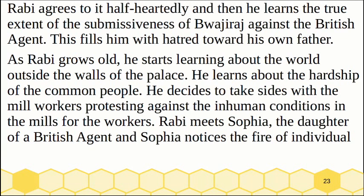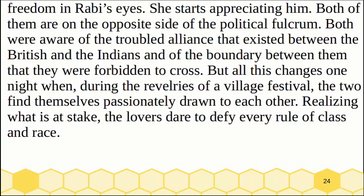As Rabi grows older, he starts learning about the world outside the walls of the palace. He learns about the hardship of the common people and decides to take sides with mill workers protesting against inhumane conditions. Rabi meets Sofia, the daughter of a British agent, and Sofia notices the fire of individual freedom in Rabi's eyes and starts appreciating him. Both of them are on opposite sides of the political fulcrum, aware of the troubled alliance between the British and the Indians and of the boundary between them that they were forbidden to cross. But all this changes one night when, during the revelries of a village festival, the two find themselves passionately drawn to each other. Realizing what is at stake, the lovers dare to defy every rule of class and race.